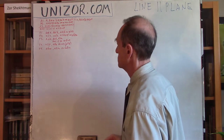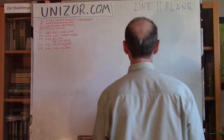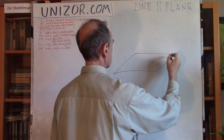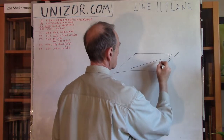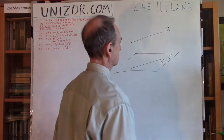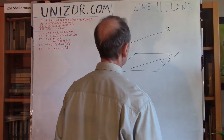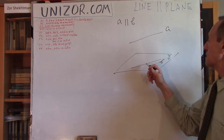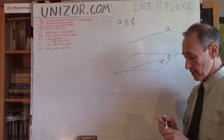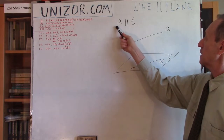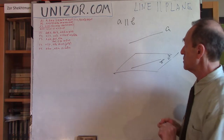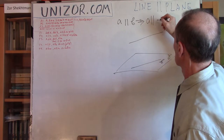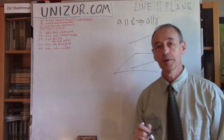Theorem number one. If you have a plane gamma, a line B on the plane, and line A outside of the plane, and A is parallel to B — so one line is inside the plane and another is outside — the theorem states that this is a sufficient condition for line A to be parallel to the entire plane gamma.